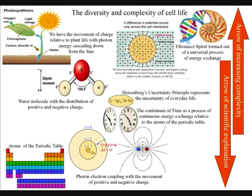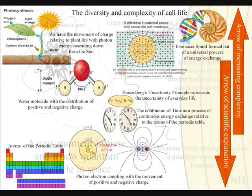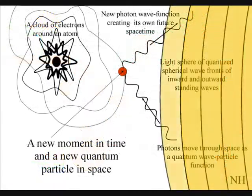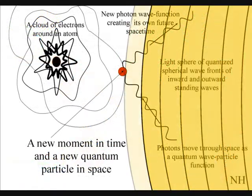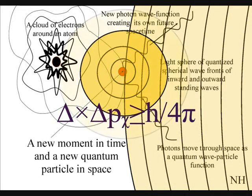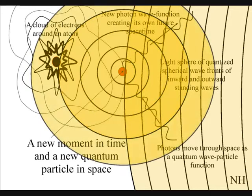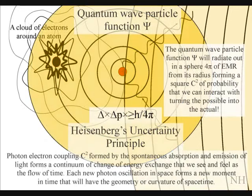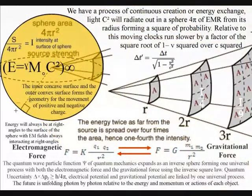At the smallest scale of this process, the photon of quantum mechanics forms a movement of charge and flow of electromagnetic fields. Therefore, even at the scale of the solar system the future is unfolding with the exchange of photon energy with each new dipole moment of photon-electron coupling.